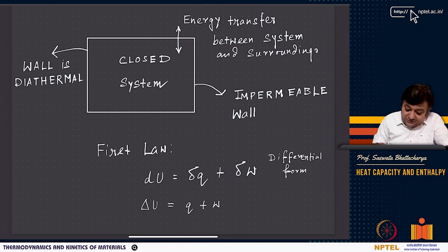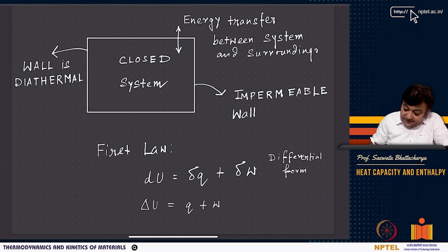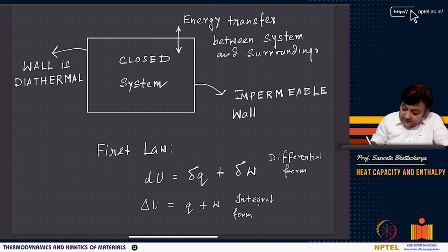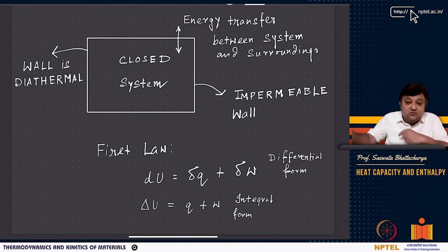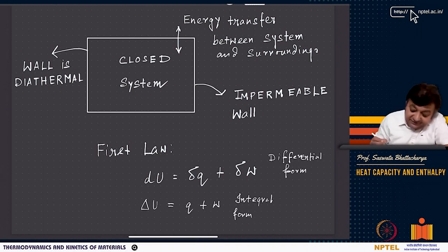When you integrate, u is a state function, so you integrate between the initial and final states to get delta u. Q and w depend on the path. This is the integral form, obtained after integration between two states.